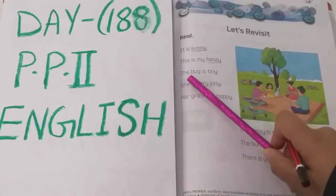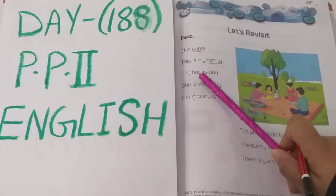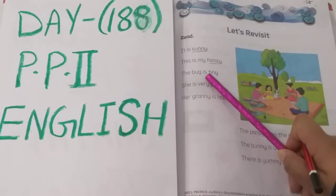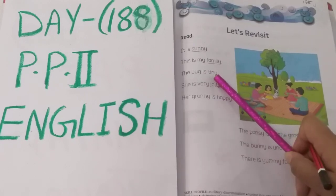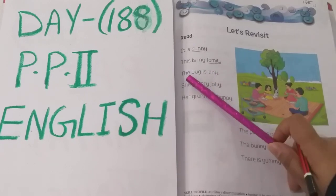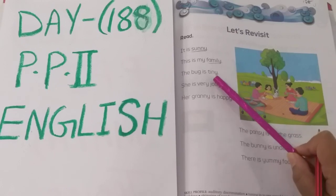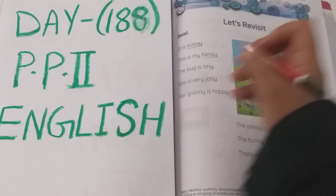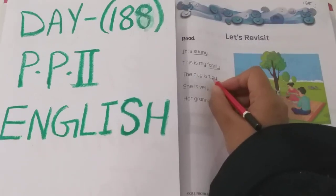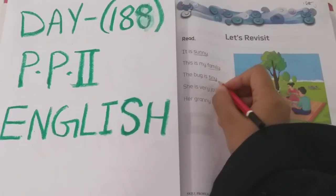Next: T-H-E, the. B-U-G, bug. I-S, is. T-I-N-Y, tiny. The bug is tiny. So in this, where is Y? Here you can see the letter Y in tiny. So underline this.